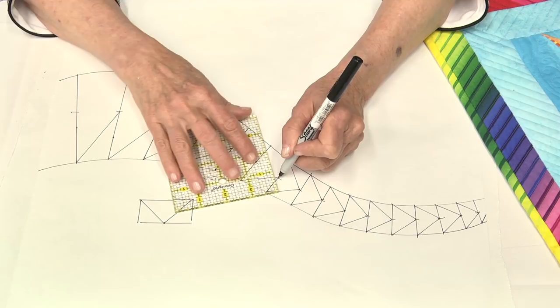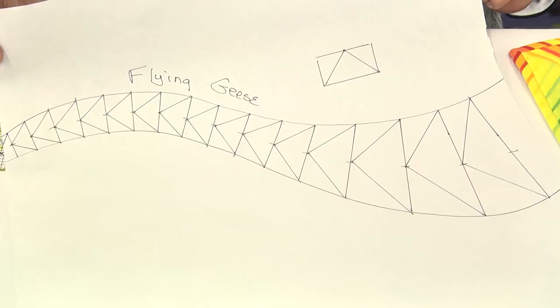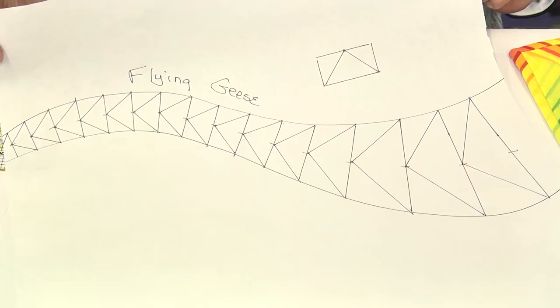And there you have it. A little row of flying geese. And I'll see you at the next AQS quilt week.